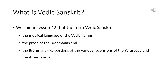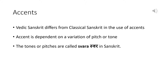The term Vedic Sanskrit refers to the metrical language of the Vedic hymns and the prose of the Brahmanas and the Brahmana-like portions of the various recensions of the Yajurveda and the Atharvaveda. One of the key aspects in which Vedic Sanskrit differs from classical Sanskrit is the use of accents. The ancient Sanskrit accent is described as being dependent on a variation of pitch or tone. It is never described by the grammarians as a difference of stress as in English.